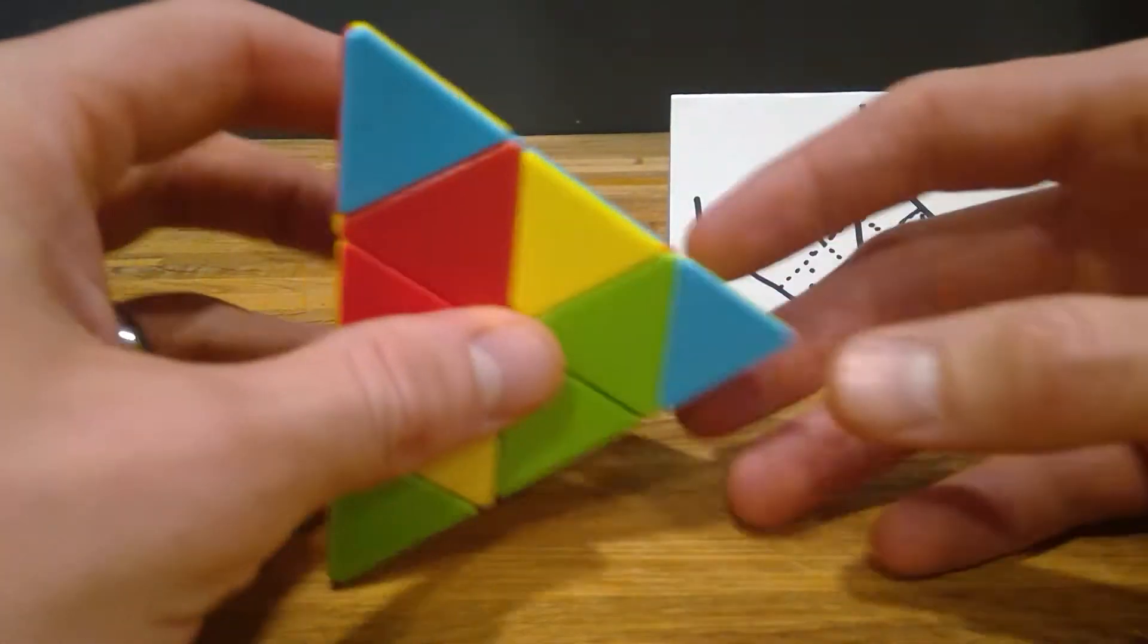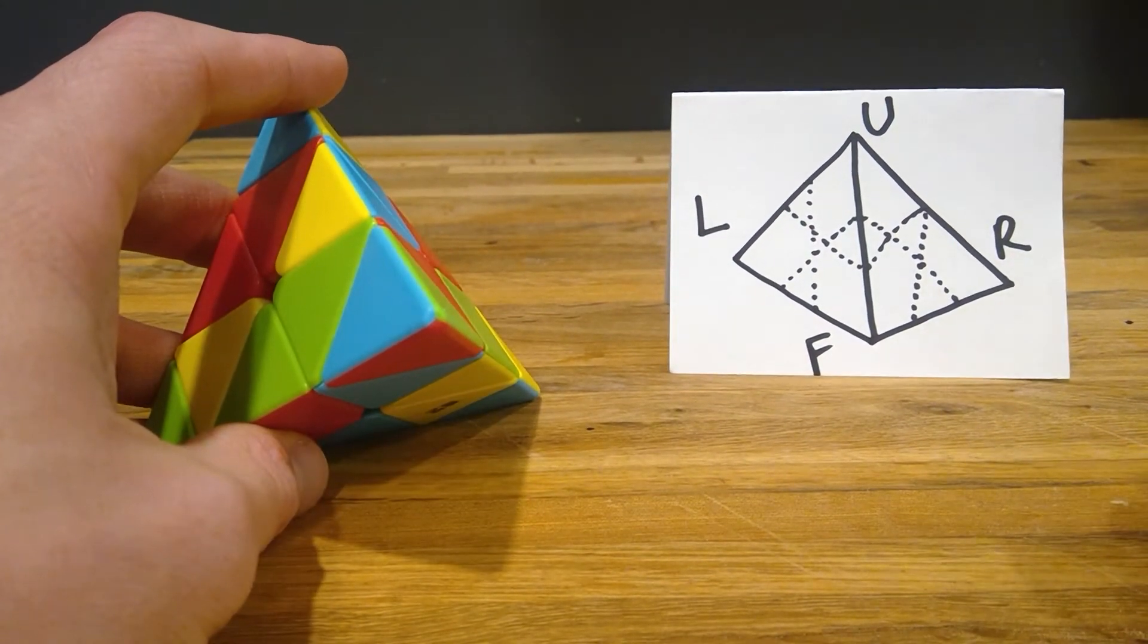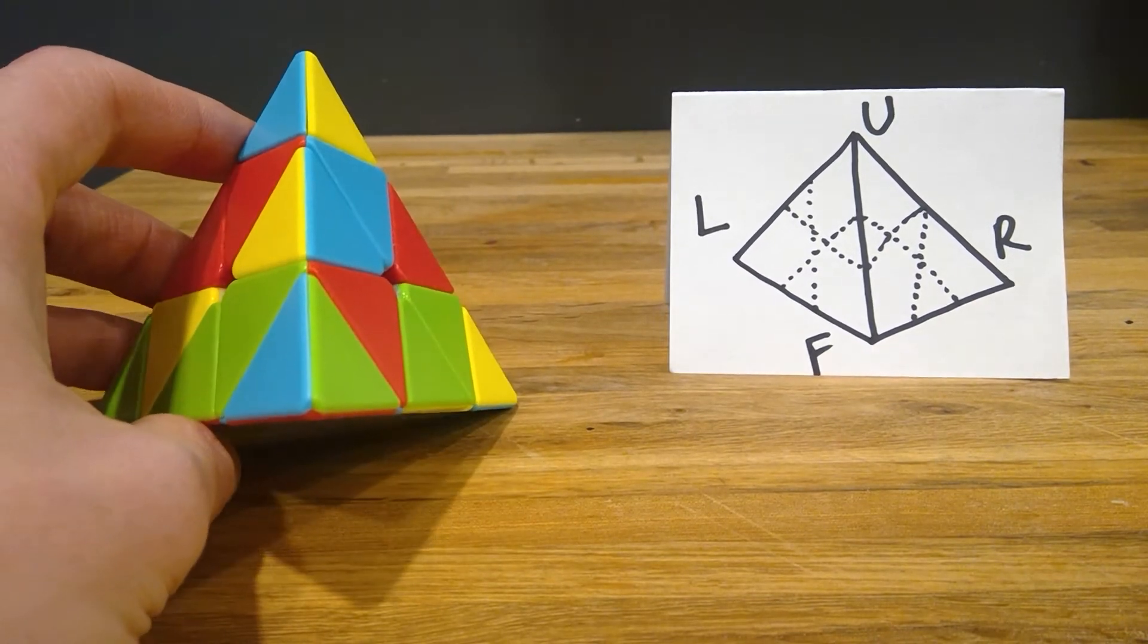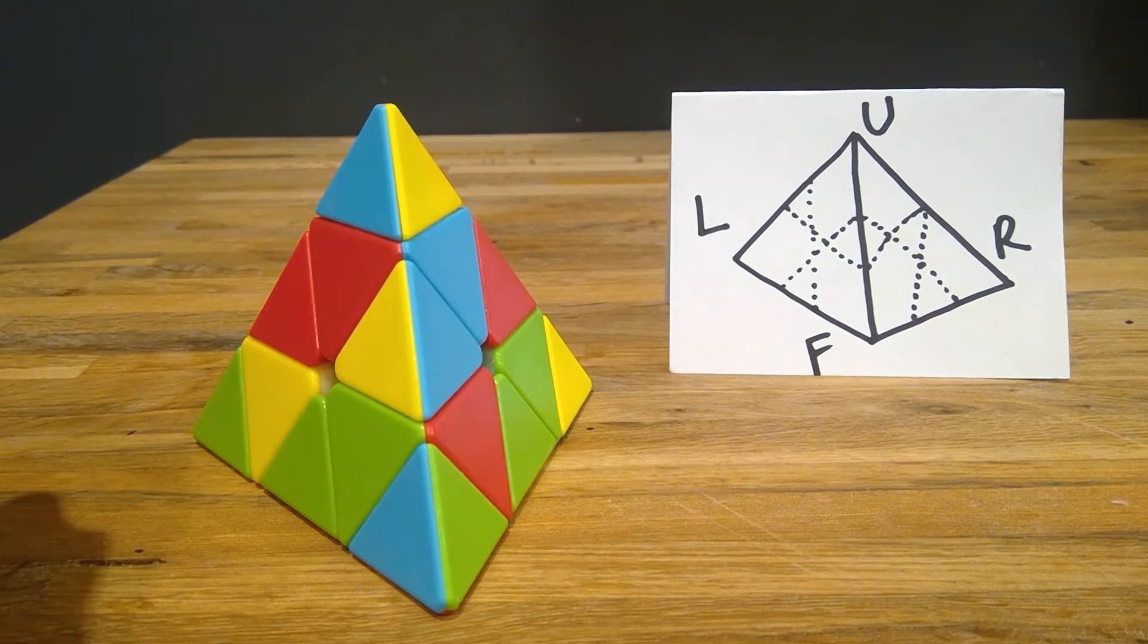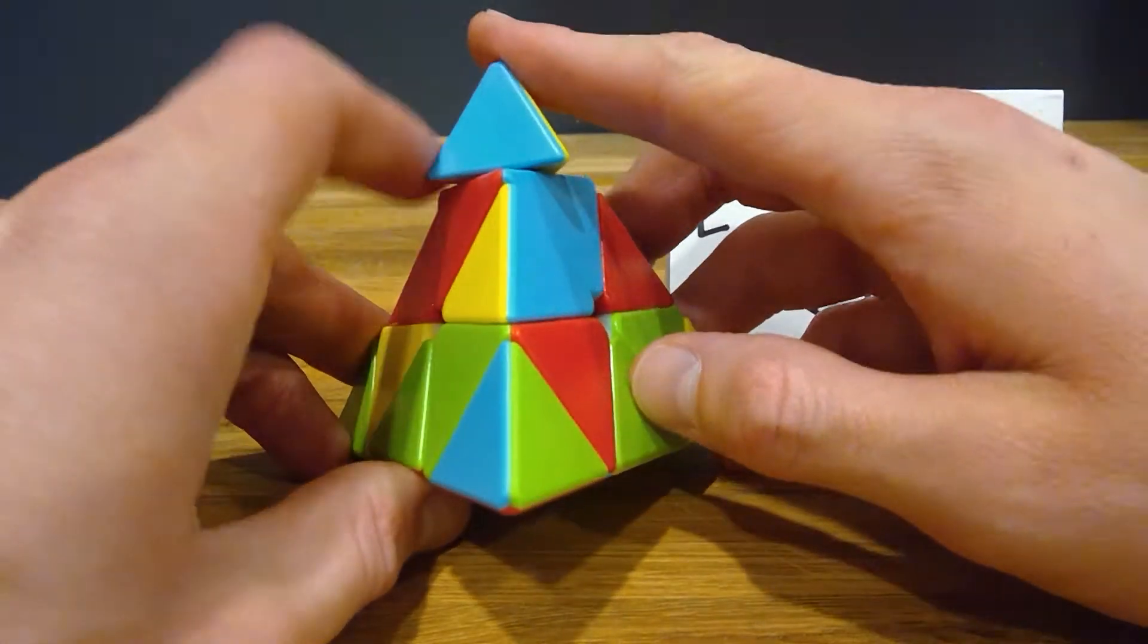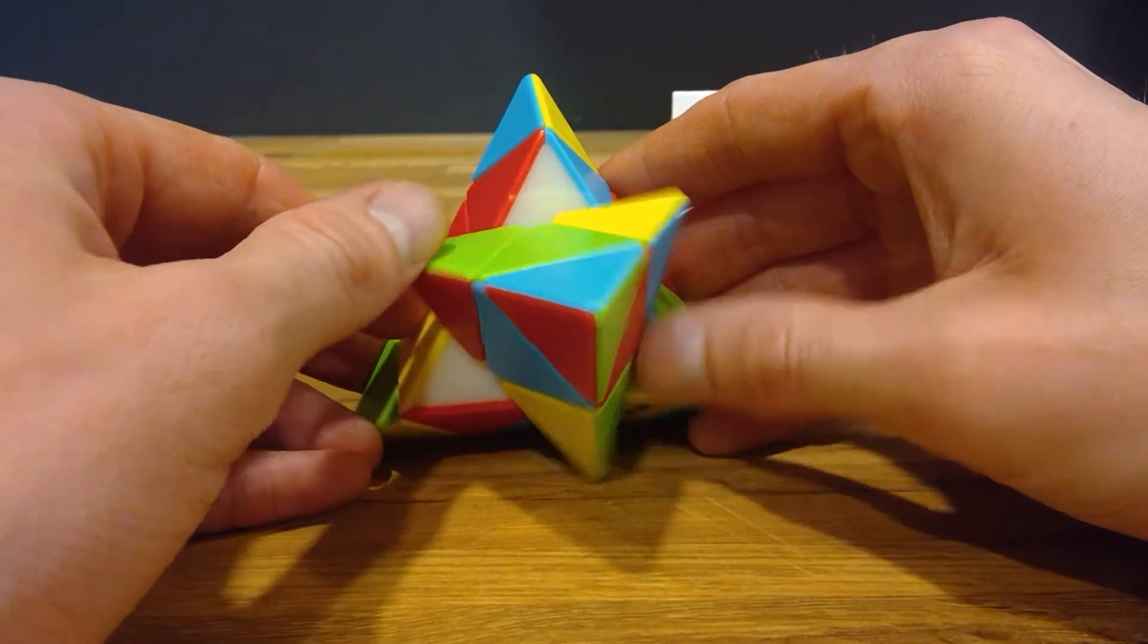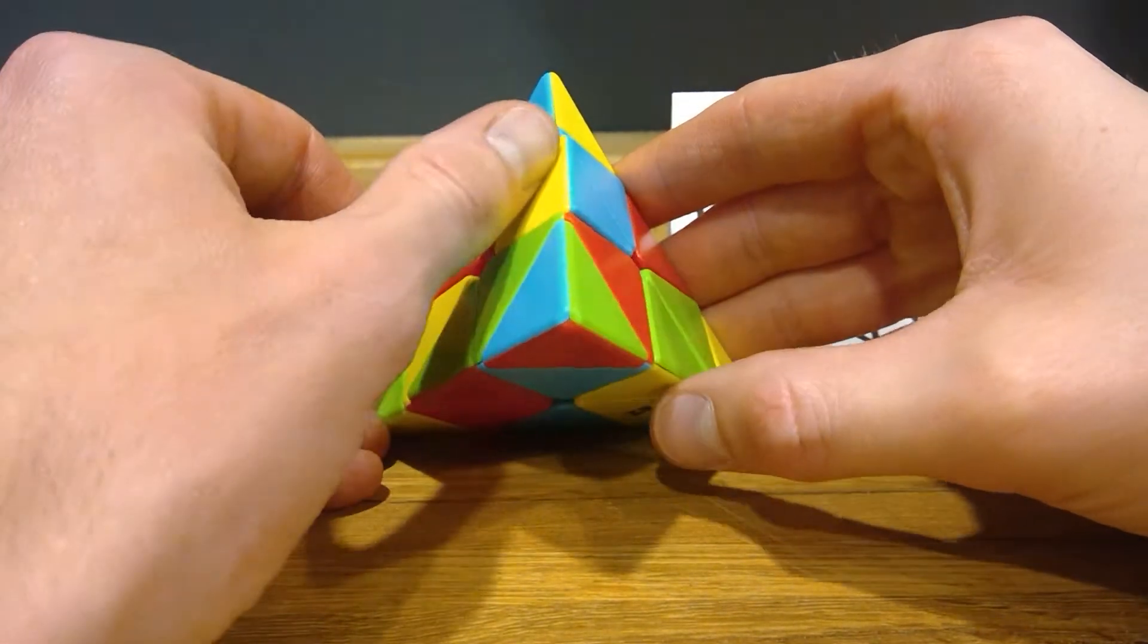And then there's a couple algorithms. There's only two algorithms you really need to know for this, and one of them's very, very easy. So I really don't think there's a lot of memorization here. But if you need to memorize these algorithms, I have written them down for you, and I'll show them to you on the screen. But you need to understand how they work. When I say F, I'm going to refer to F as the front.